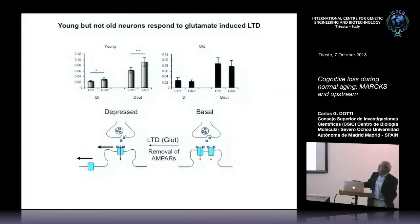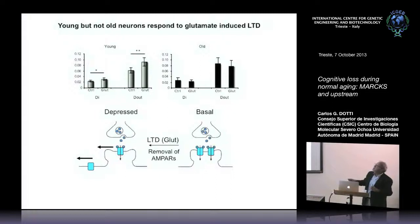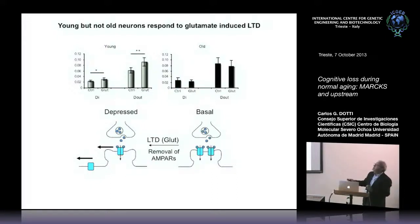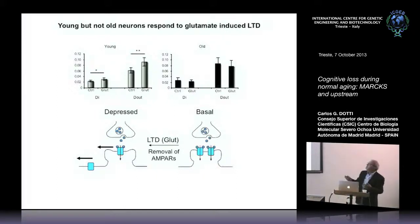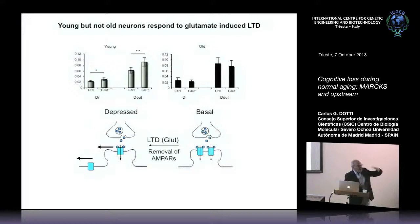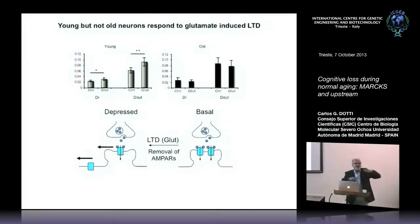In the young animal, when you put glutamate there is an increased lateral diffusion of single receptors both within the synapse and in perisynaptic regions. In the cell from an old animal, no matter how much glutamate you put, the receptors move much less — there is very little diffusion. This is a bit counterintuitive given the loss of cholesterol, because you might expect more membrane fluidity. Apparently that is not the case.